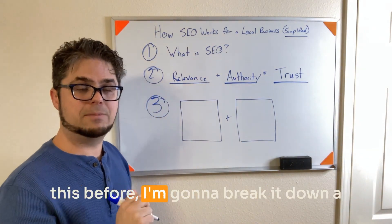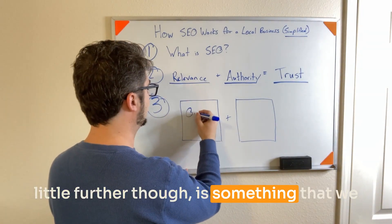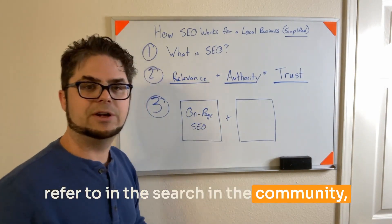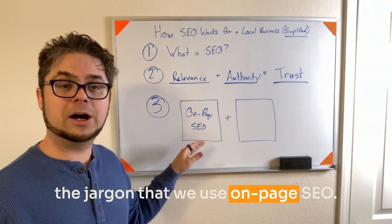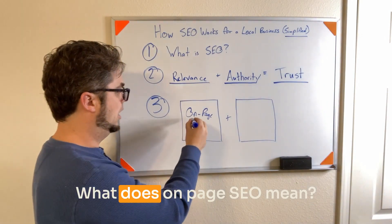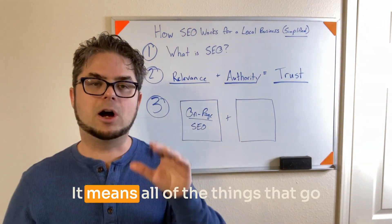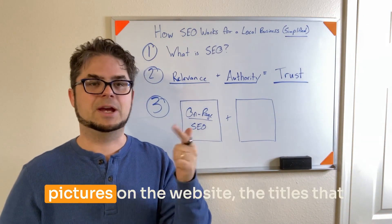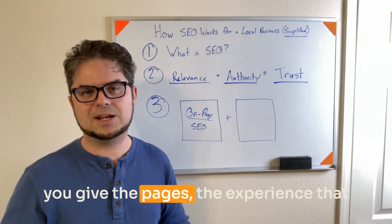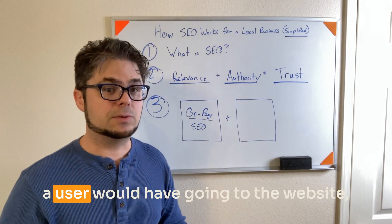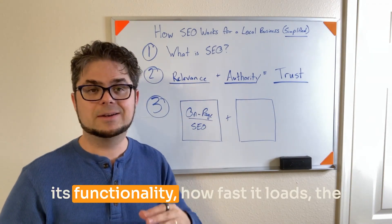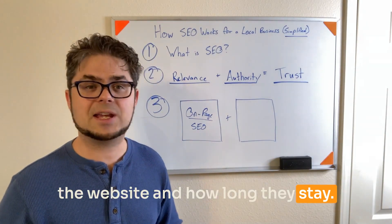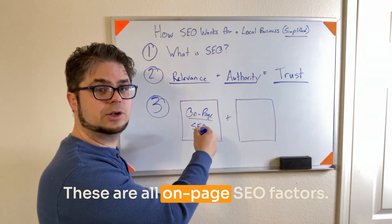The first thing is — and you may have heard this before, I'm going to break it down a little further — is something that we refer to in the SEO community. The jargon that we use is on-page SEO. What does on-page SEO mean? It means all of the things that go into your actual website itself: the information on the website, the pictures on the website, the titles that you give the pages, the experience that a user would have going to the website, its functionality, how fast it loads, the amount of people visiting the website and how long they stay. These are all on-page SEO factors.